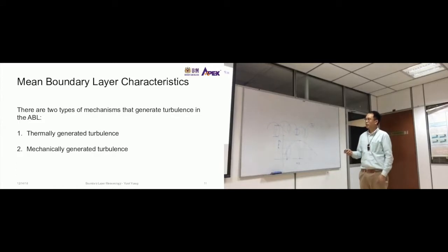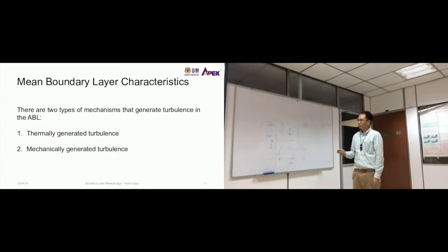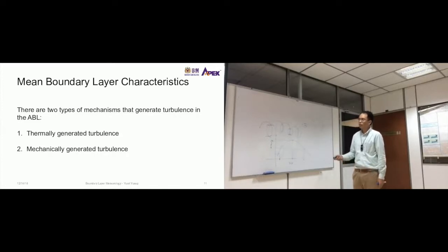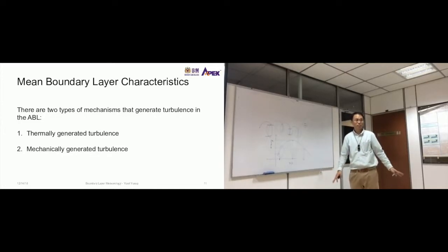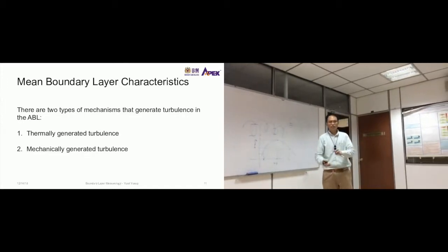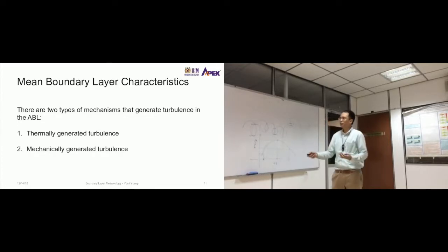There are two types of mechanisms that generate turbulence in the atmospheric boundary layer. First, thermally generated turbulence — generated by differences in temperature or surfaces that are hot or cold. Second, mechanically generated turbulence. The turbulence carries pollutants, moisture, and so on vertically, and this vertical transport depends on the surface. Thermally generated turbulence relates to albedo and Bowen ratio, while mechanically generated turbulence comes from surface roughness.